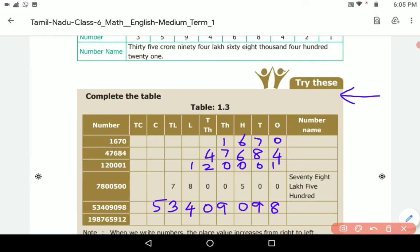The last one: 2, 1, 9, 5, 6, 7, 8, 9, 1. So 19 crore, 87 lakh, 65 thousand, 912. The number name is 19 crore, 87,65,912.